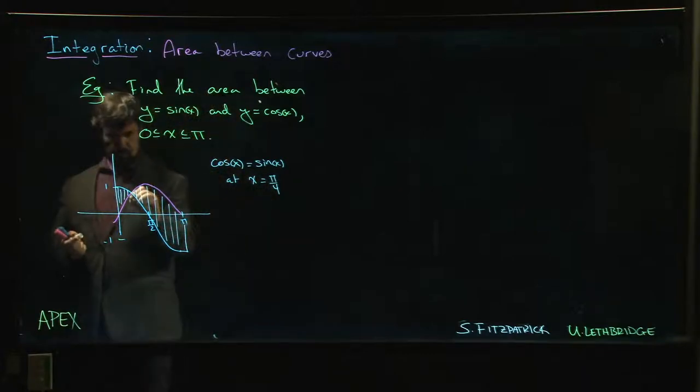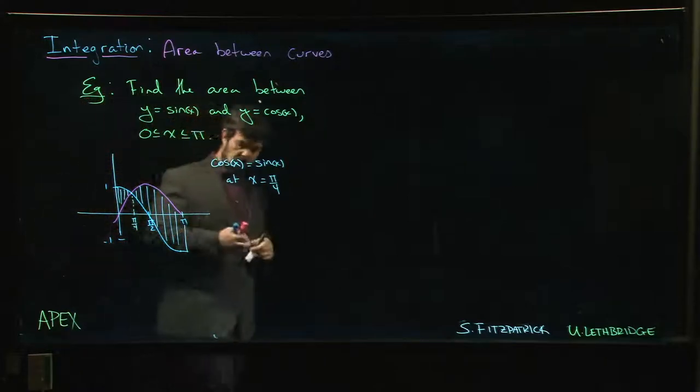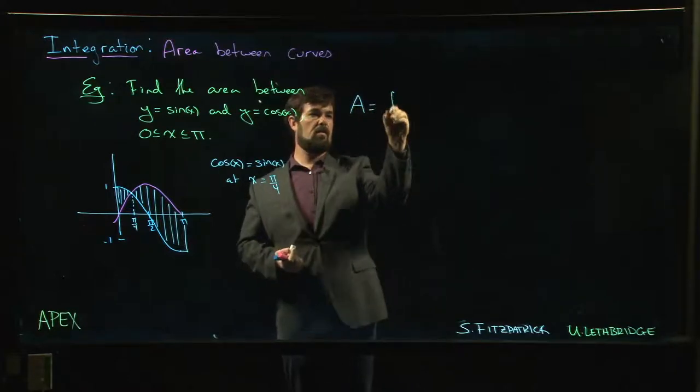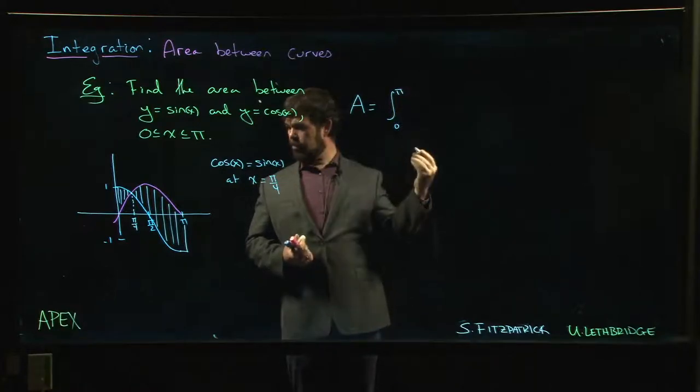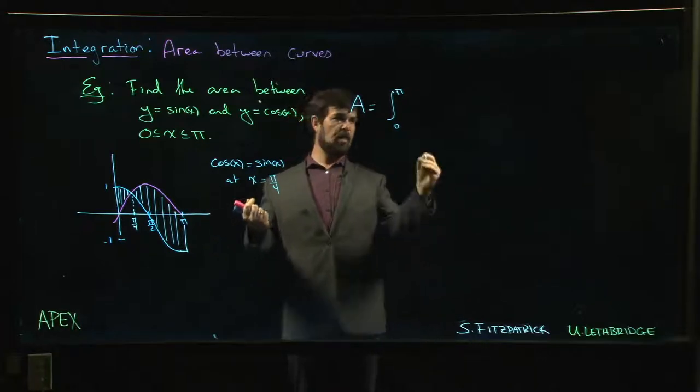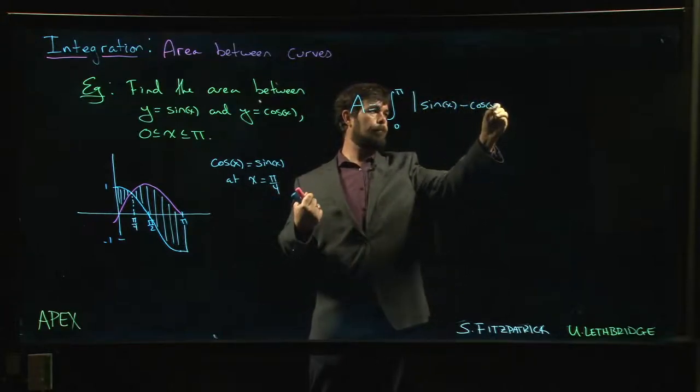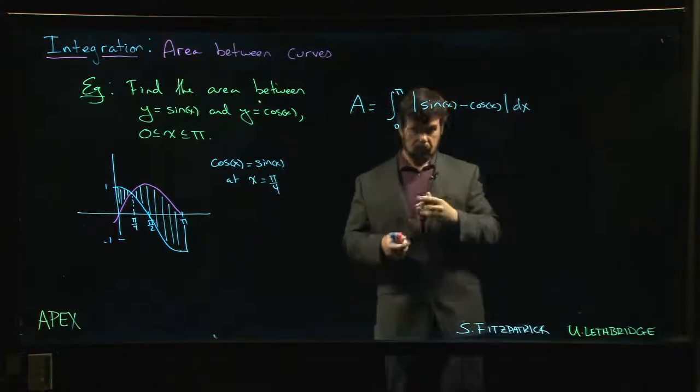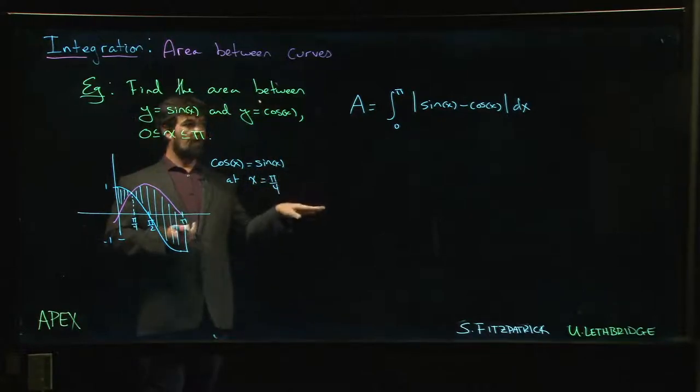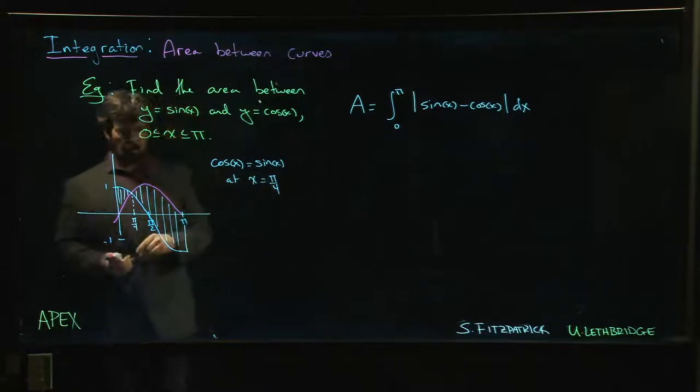Okay, so you've got that intersection point. One of the ways you can deal with this—you'll find there's different ways of setting it up—we want to make sure that we're always doing the positive value, right? We want area to always be positive. Well, if you have something that might be negative, put an absolute value around it. The trouble with absolute value is that it's piecewise defined. It's either going to be sine minus cos or cos minus sine, depending on whether sine minus cos is positive or negative.